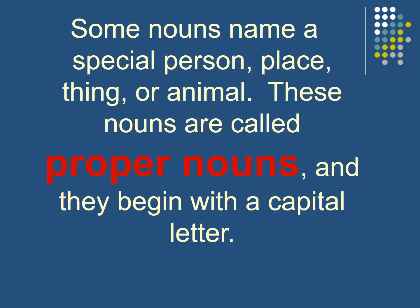Some nouns name a special person. For example, when I give the name of a person — if I have the word boy, boy is a common noun. While if I have Adam, Adam is called a proper noun. So the names are called proper nouns and they begin with a capital letter. We have to write them with a capital letter.